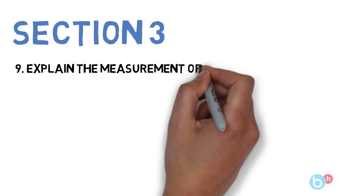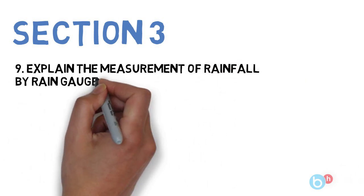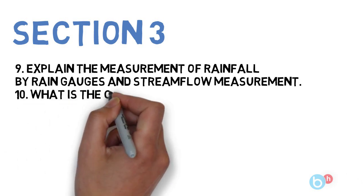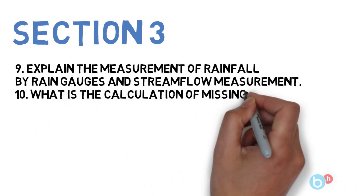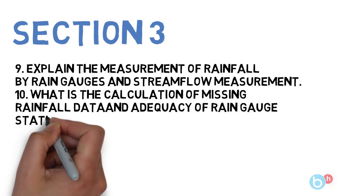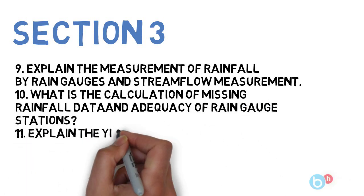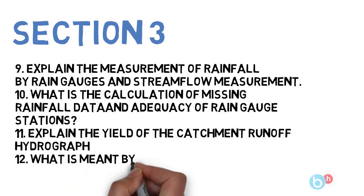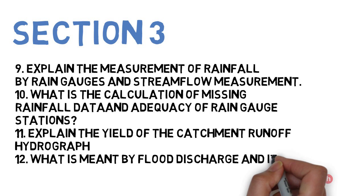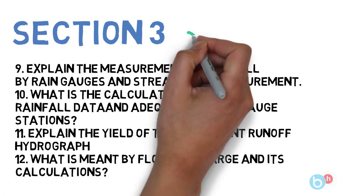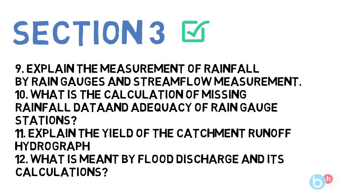Talking about section three, here again we'll do four questions. First is explain the measurement of rainfall by rain gauges and streamflow measurement. Next is what is the calculation of missing rainfall data and adequacy of rain gauge stations. Next is explain the yield of the catchment runoff hydrograph. And the last one is what is meant by flood discharge and its calculations.